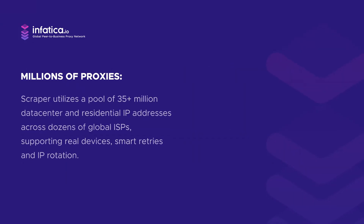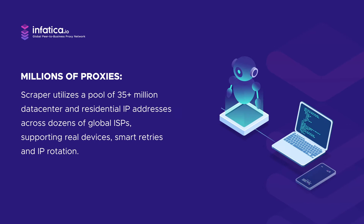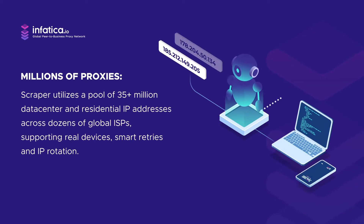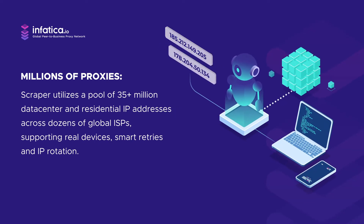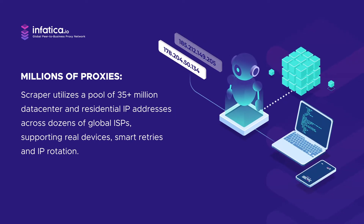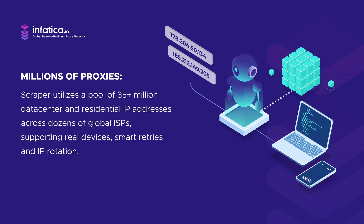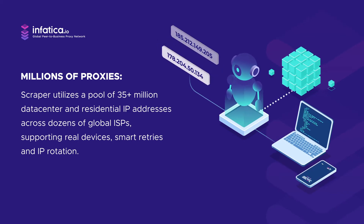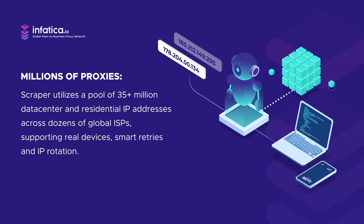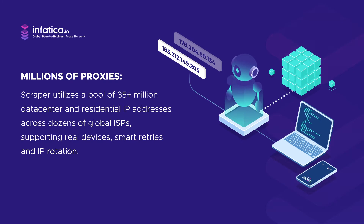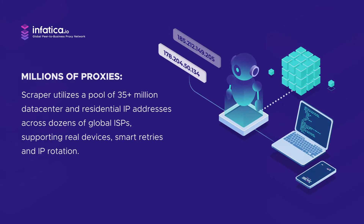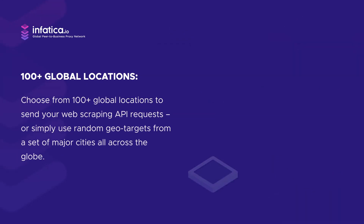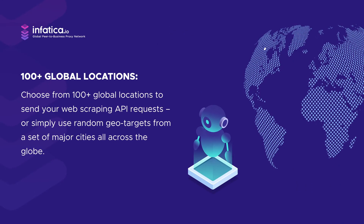Millions of proxies and IPs. Scraper utilizes a pool of more than 35 million data center and residential IP addresses across dozens of global ISPs, supporting real devices, smart retries, and IP rotation. More than 100 global locations.